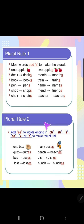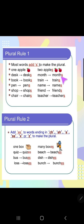Let's see some of the rules. Rule number one: most words just add 's'. For example: desk → desks, book → books, pen → pens, shop → shops, chair → chairs, one apple → two apples, month → months, train → trains, name → names, friend → friends, teacher → teachers.